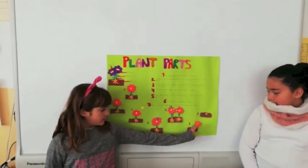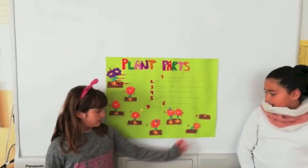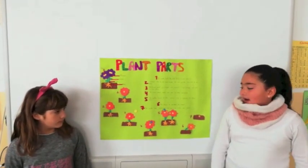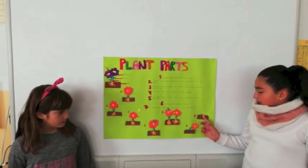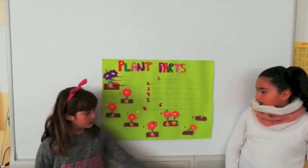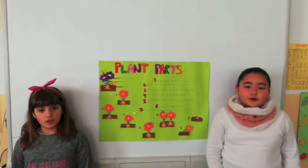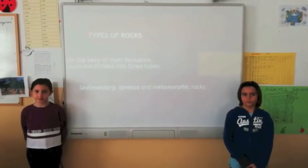The pollen is carried by insects and is spread to other plants. The flowers die and the seeds are formed. The seeds are scattered and grow to make new plants. Thank you for your attention. Have you got any questions or comments?